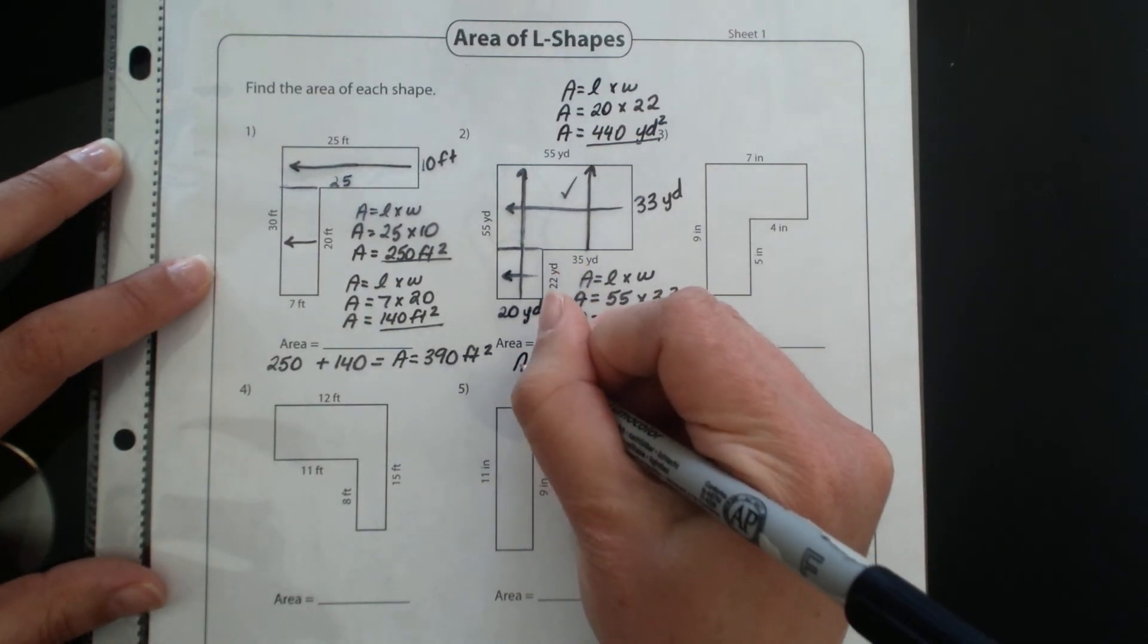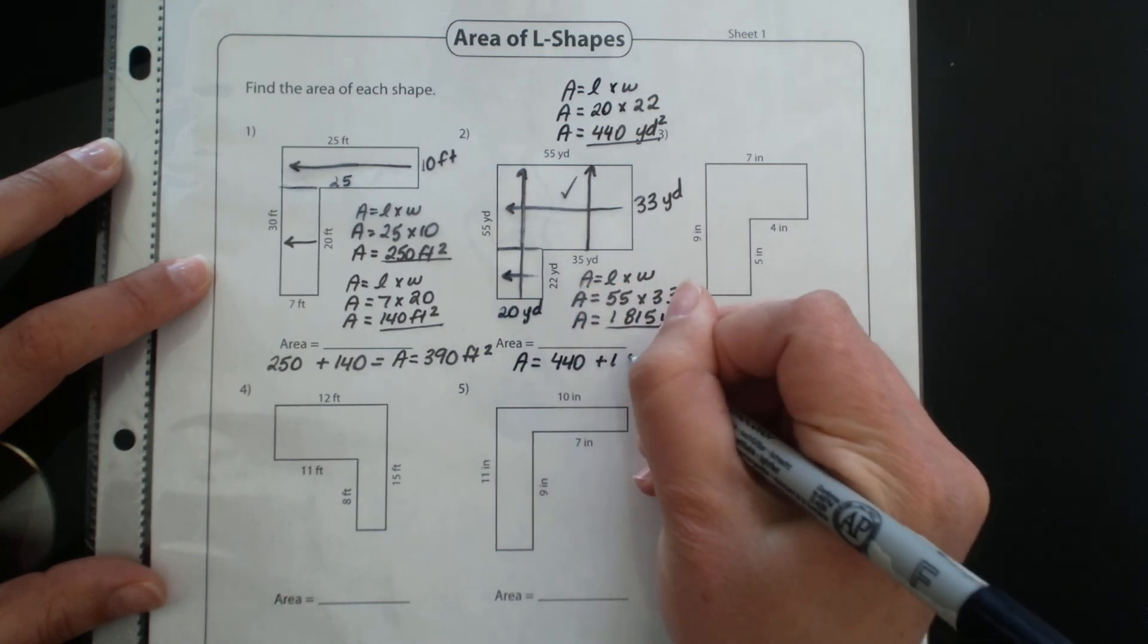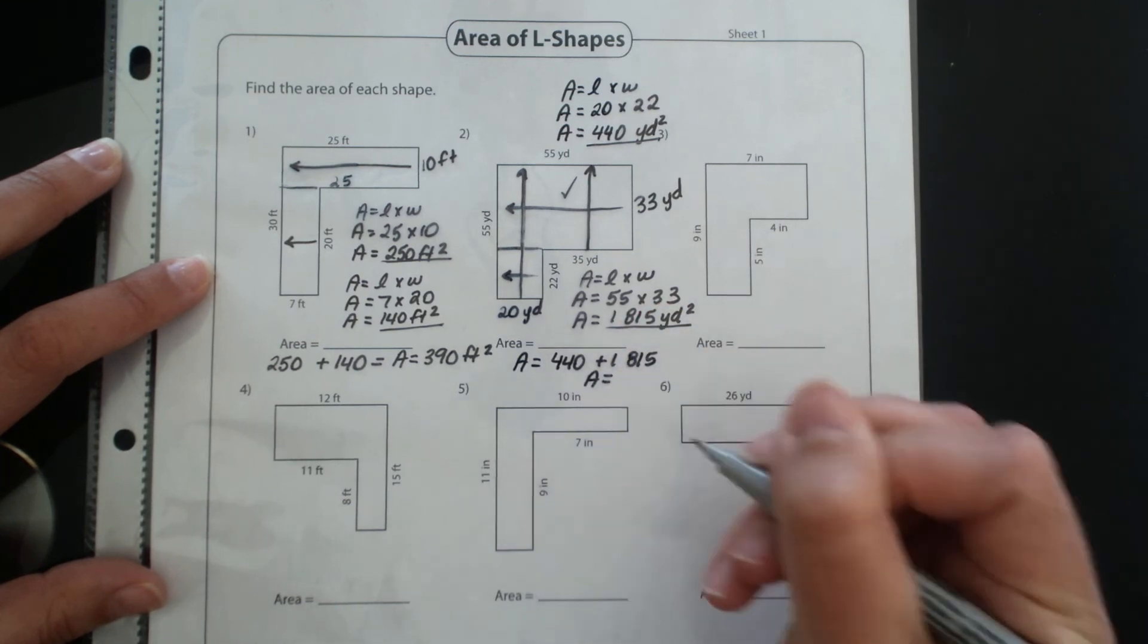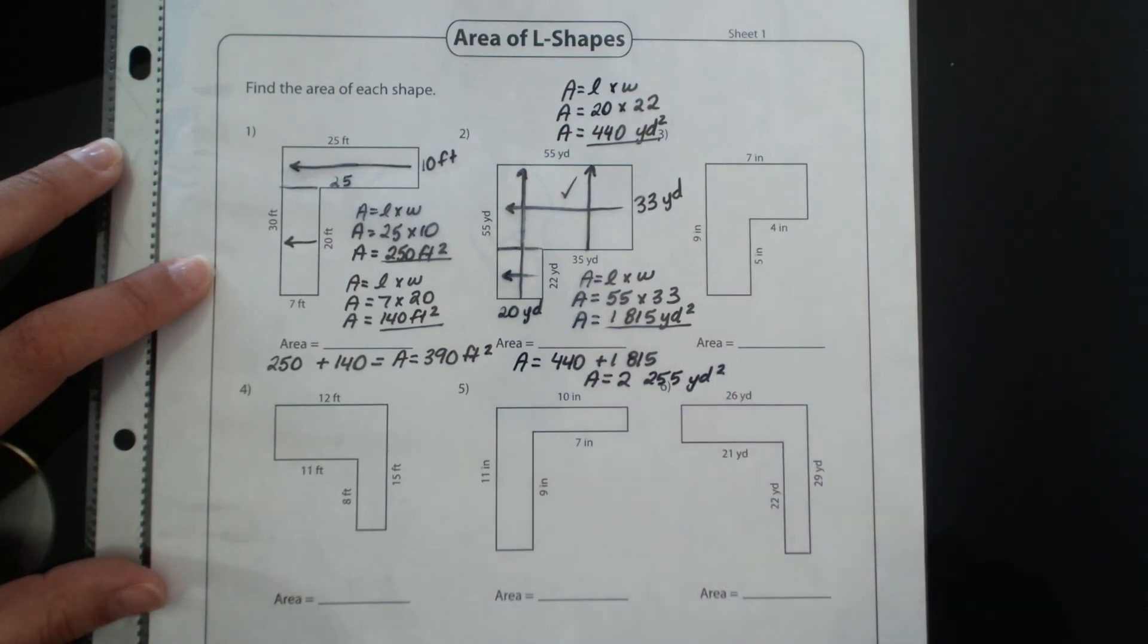So area equals 440 plus 1815 for a grand total of 2255, and I'm making sure to include my units.